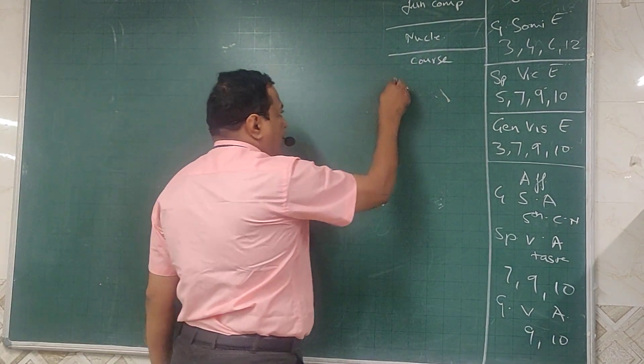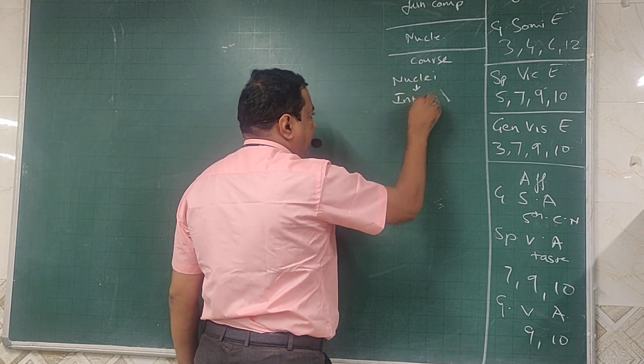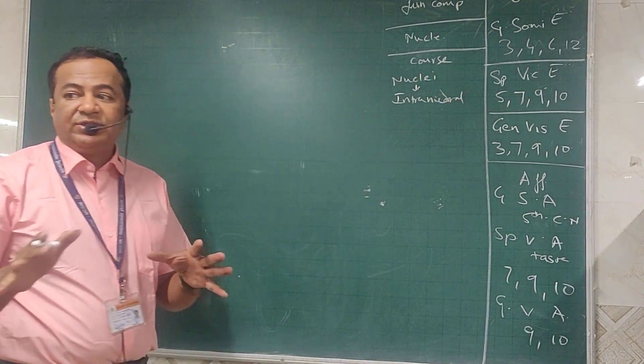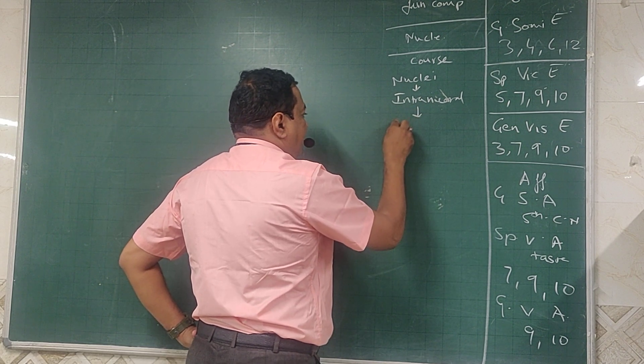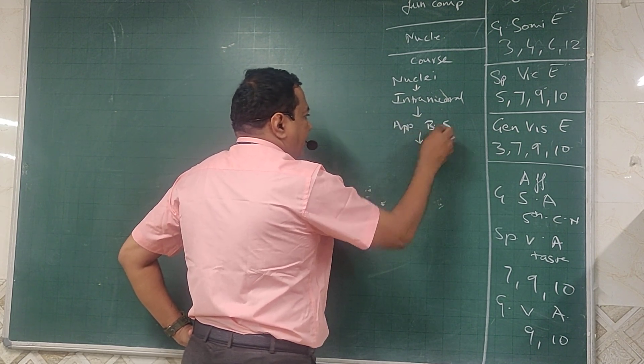From the nuclei starts intranuclear course, that is inside, inside the brainstem. How is the course? Then we talk about where does it appear on the brainstem, appearance on brainstem.